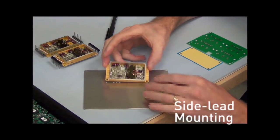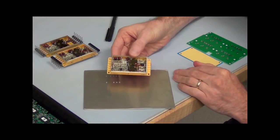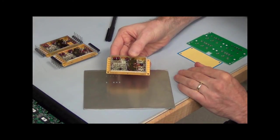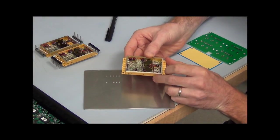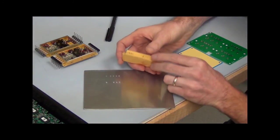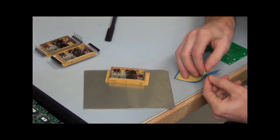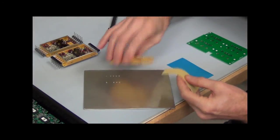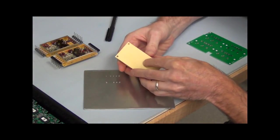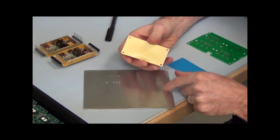Mounting the side lead package is relatively straightforward. There's four mounting holes which can be used to fasten it to the heat sink or chassis or possibly the printed circuit board. Again the base plate should be mounted for proper thermal transfer and we recommend a thermal pad for good thermal transfer between the part and the heat sink.